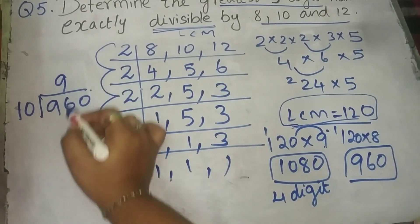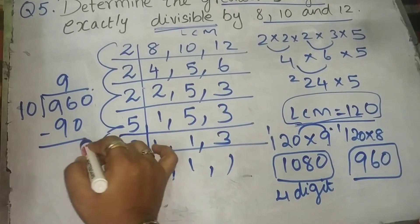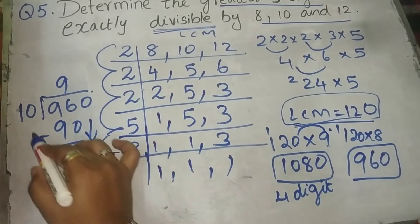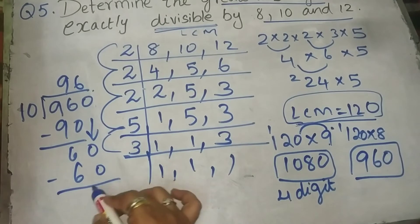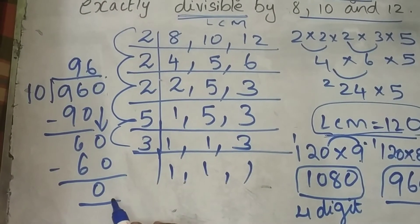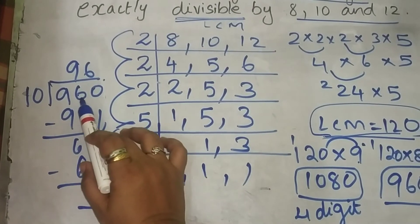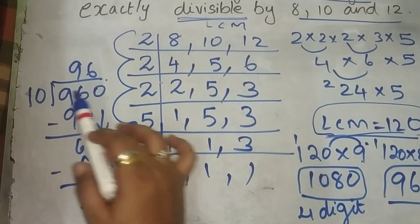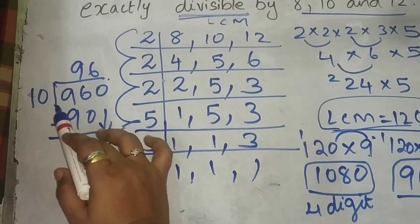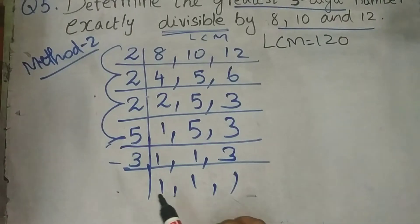960 divided by 10. So, 9 10's are 90. Then, 6 remainder. Then, 0. Then, 10 6's are, it is 60. So, what you are getting? I got the remainder as 0. So, you can conclude that 960 is divisible by 10. So, exactly it is divisible by 10.